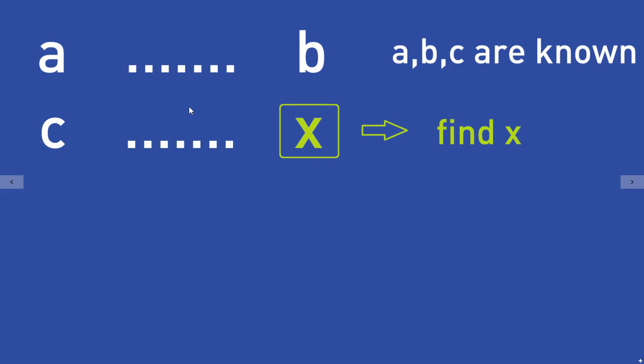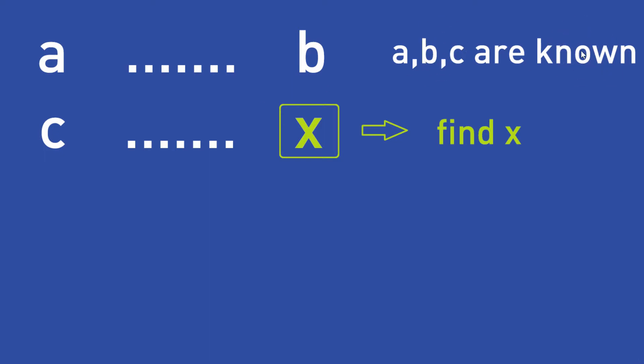You know the values A, B, and C — these are known from your text problem. And the task is to find the unknown value X.